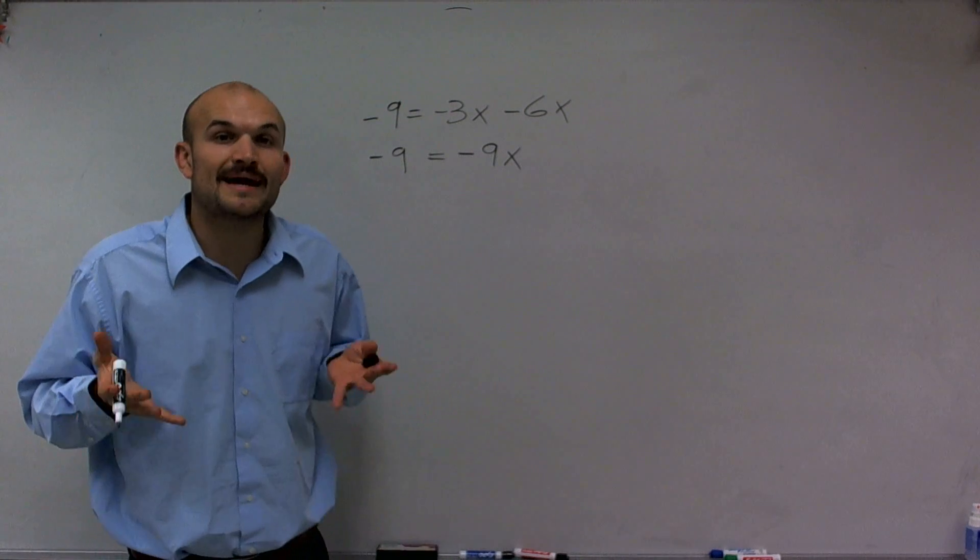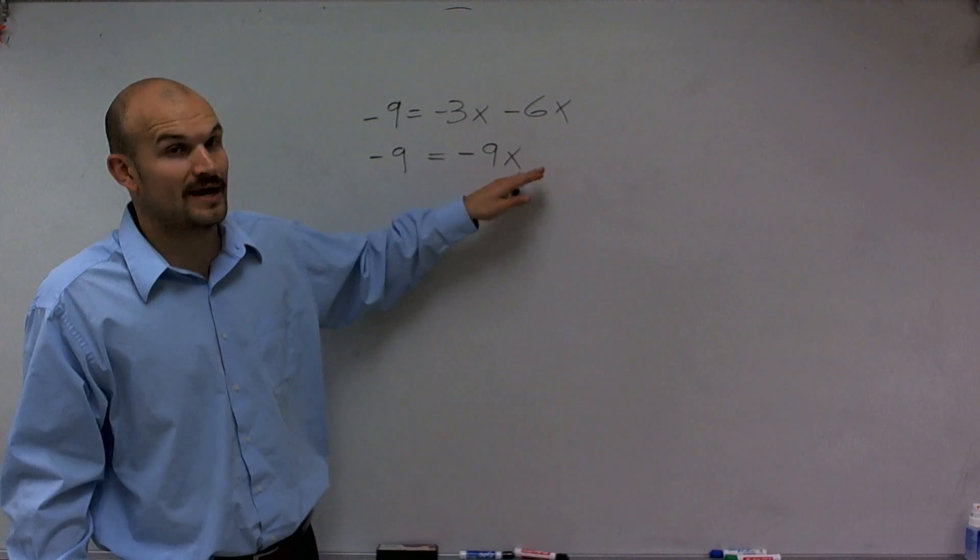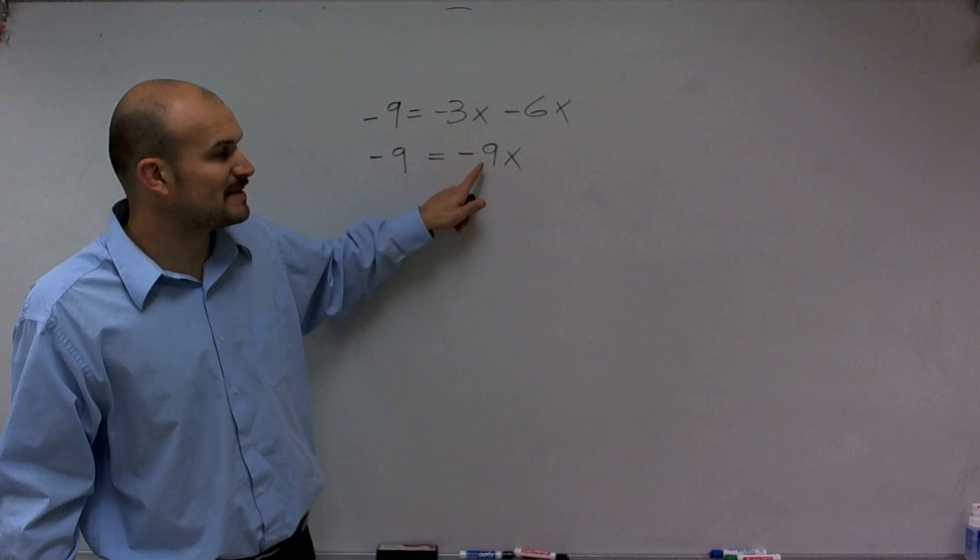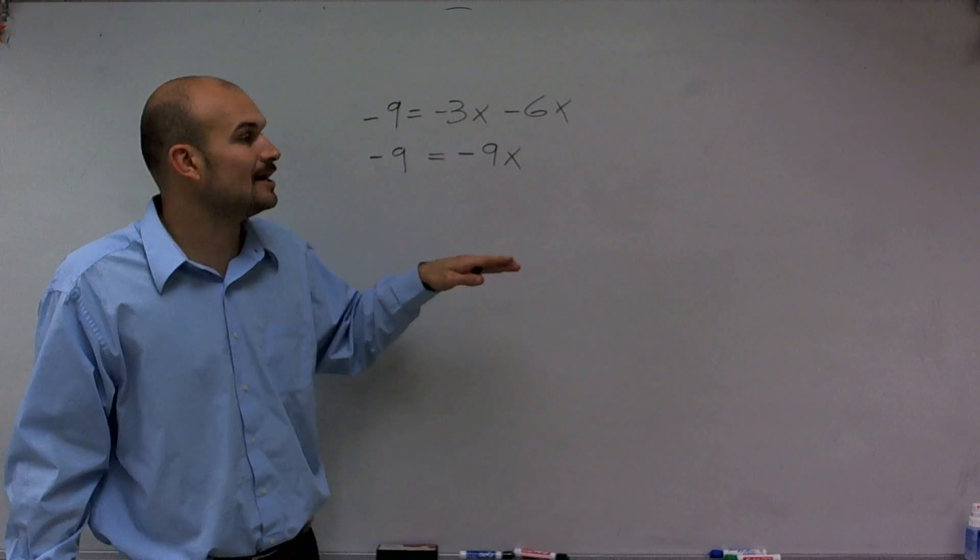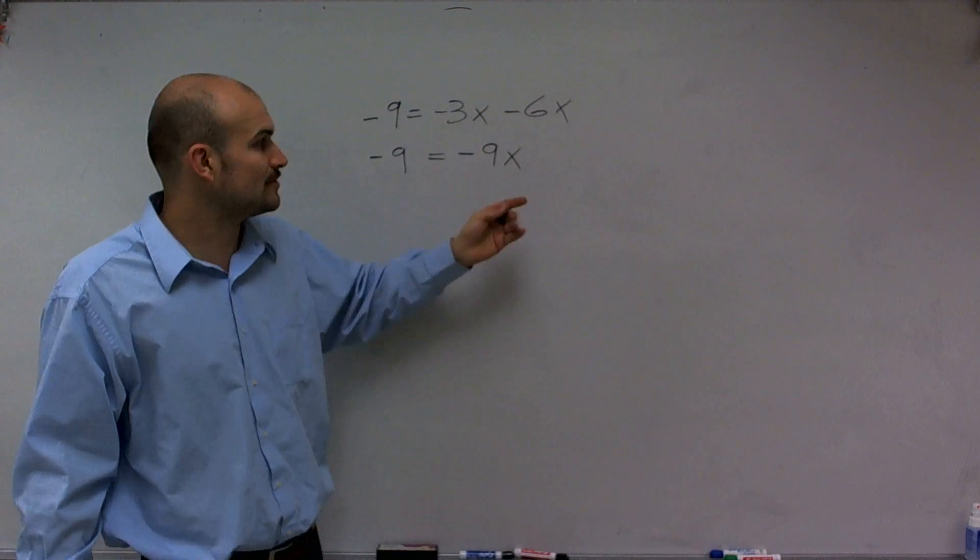Now what I need to do is use my inverse operations to solve for x. What I notice is my variable is being multiplied by -9. So to isolate the variable, to get it by itself, I have to undo what's happening to it.